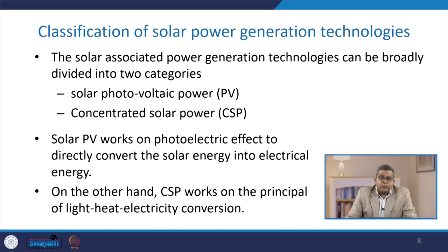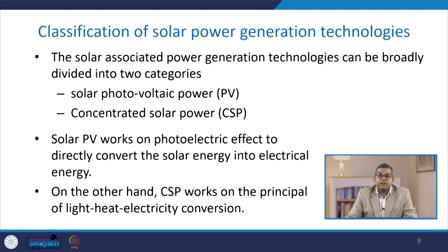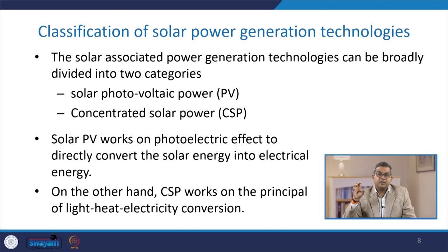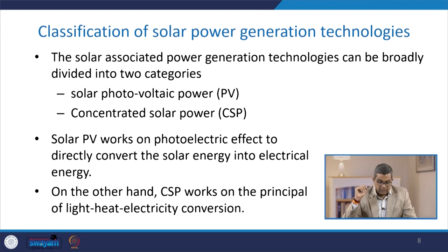When we talk about the potential of solar power generation, the question arises of how we can classify solar power generation technology. Solar associated power generation technology can be broadly divided into two categories: one is solar photovoltaic power, that is PV, and the other is concentrated solar power, that is CSP. Solar photovoltaic works on the photoelectric effect to directly convert solar energy into electrical energy, while concentrated solar power works on the principle of light-heat-electricity conversion.